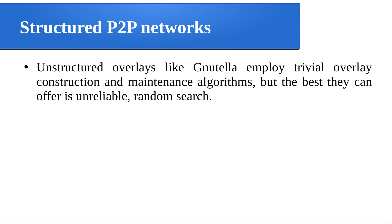Unstructured overlays, just like what we seen with Gnutella, employ trivial overlay construction and maintenance algorithms, but the best they can offer is unreliable random search. As nodes are joining and leaving the network randomly, construction and maintenance are trivial only. Because of that trivial construction, they offer only unreliable random search. There is no guarantee of getting the result, or if you are doing pure query flooding, that will lead to exponential search time.